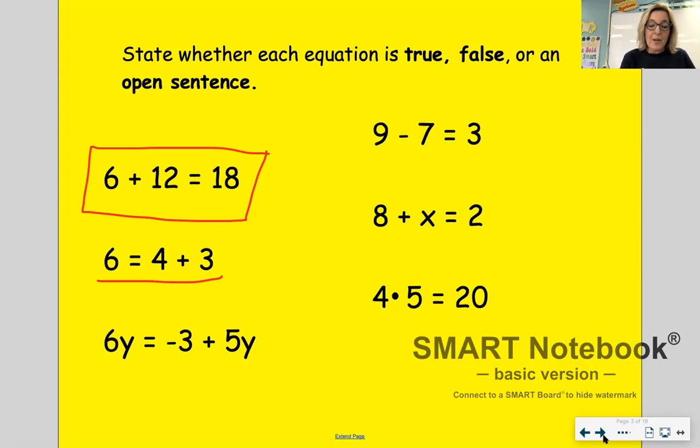6y is equal to negative 3 plus 5y would be considered an open sentence because it has a variable in it.